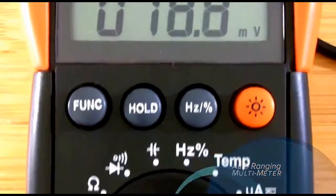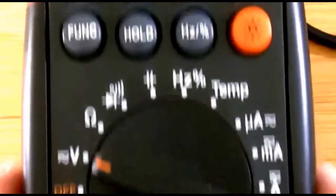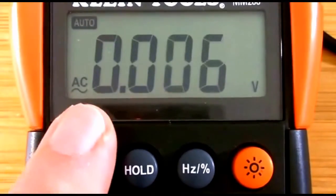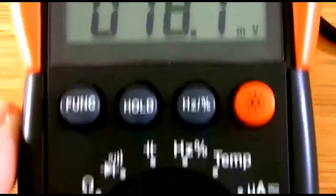And that will be direct current for batteries, alternating current for outlets or otherwise. Mine switches by pushing a button from direct to alternating. Alternating is the wave.